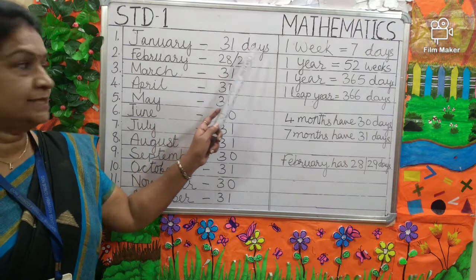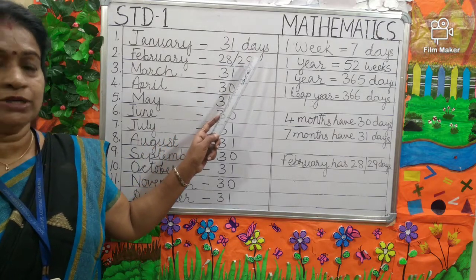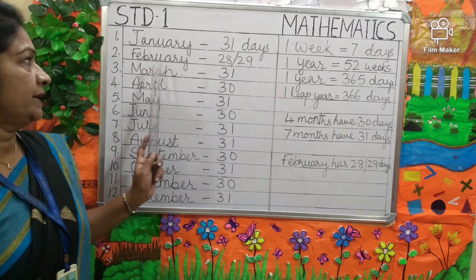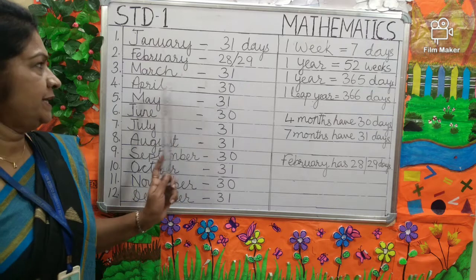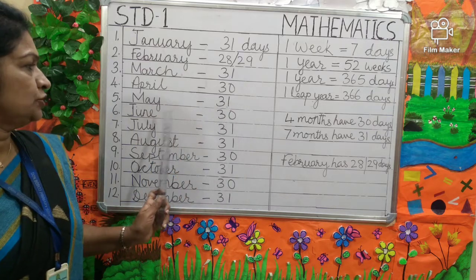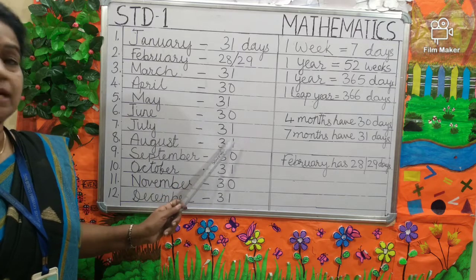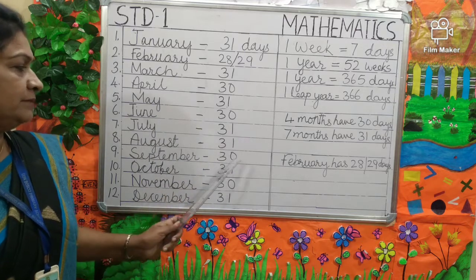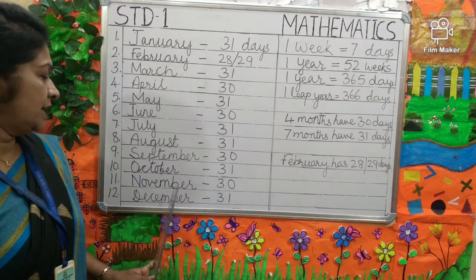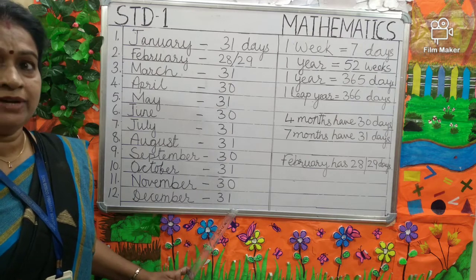January has 31 days. February has 28 or 29 days — in a leap year it will have 29 days. March: 31 days. April: 30 days. May: 31 days. June: 30 days. July: 31 days. August: 31 days. September: 30 days. October: 31 days. November: 30 days. December: 31 days.